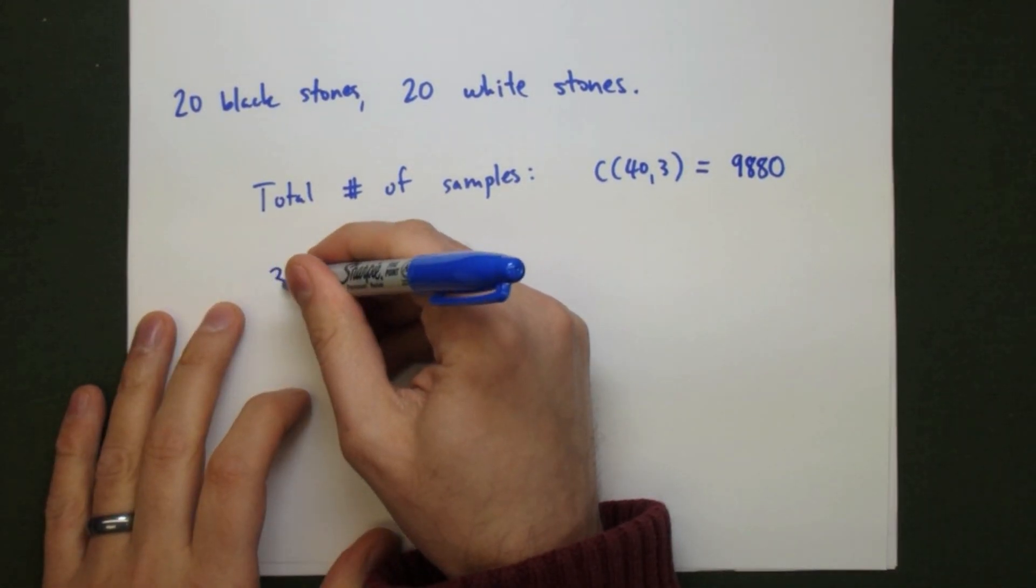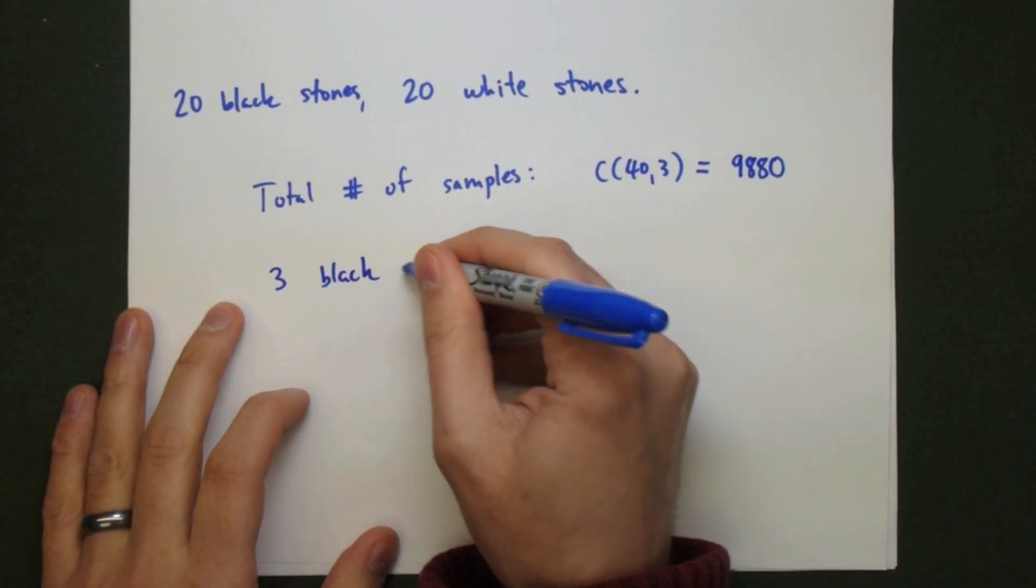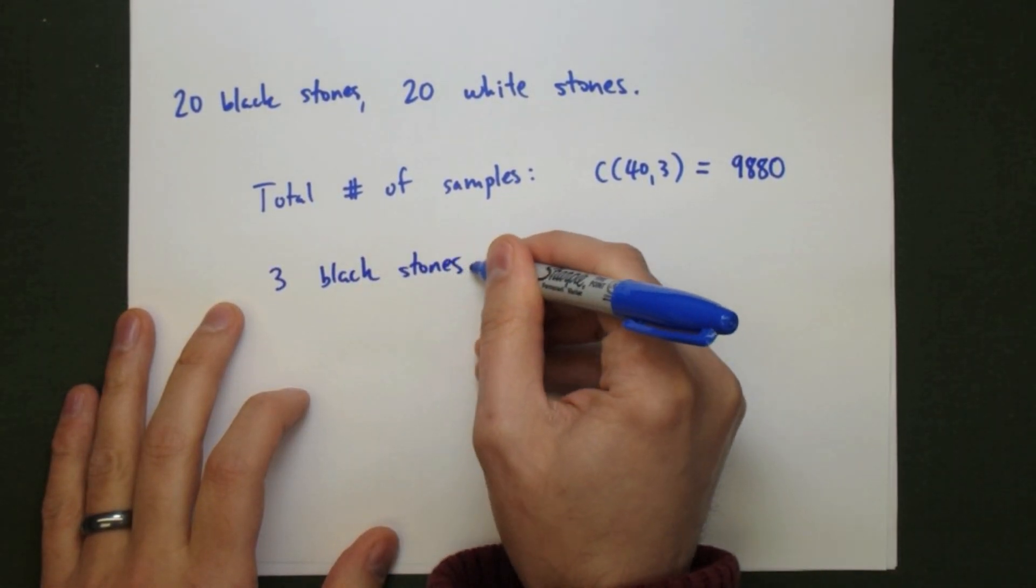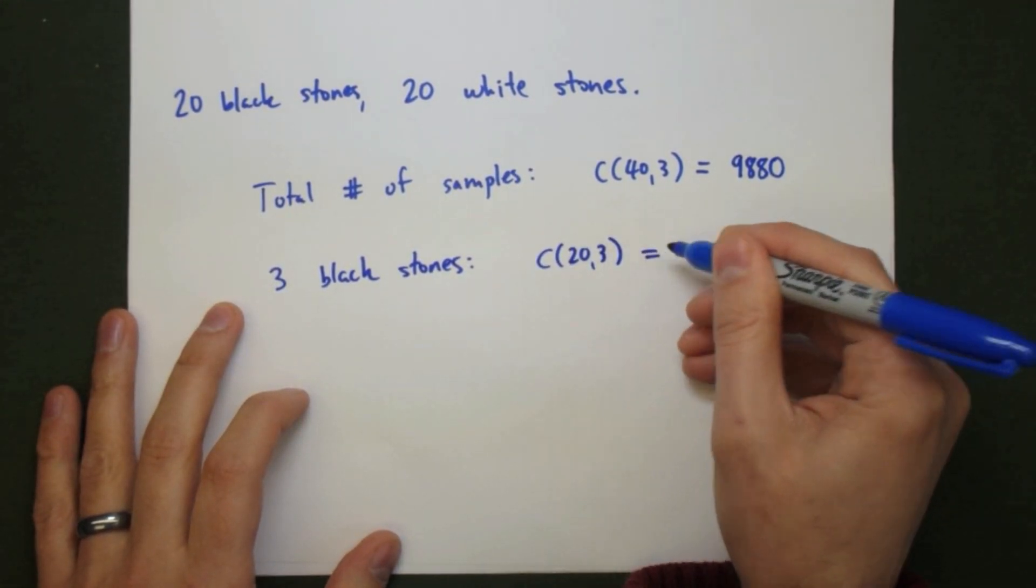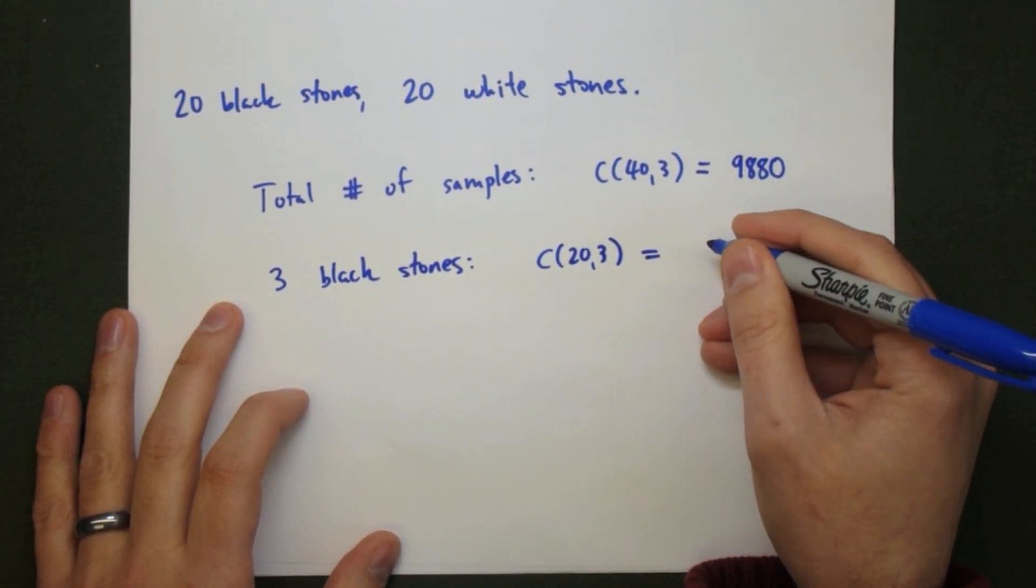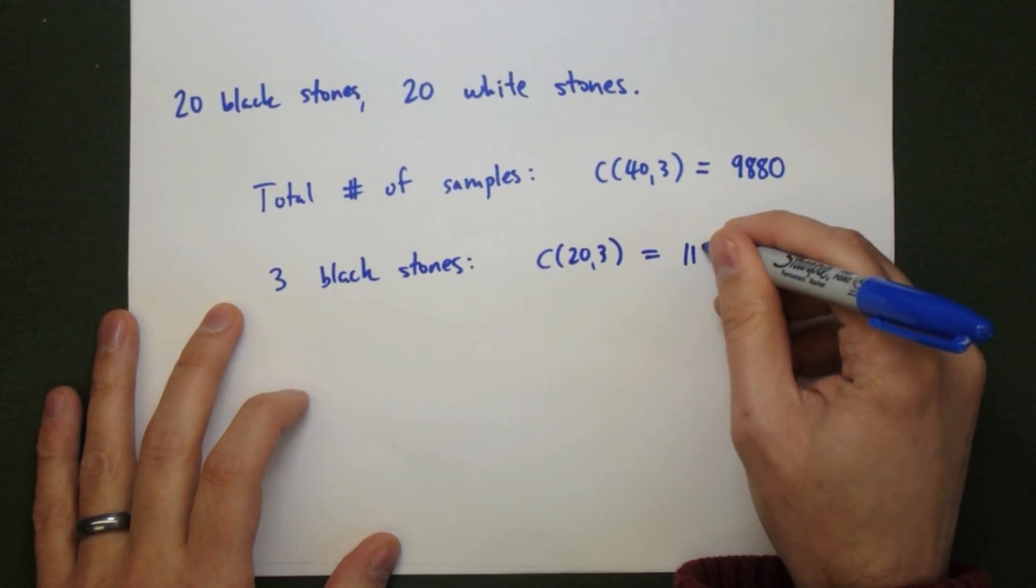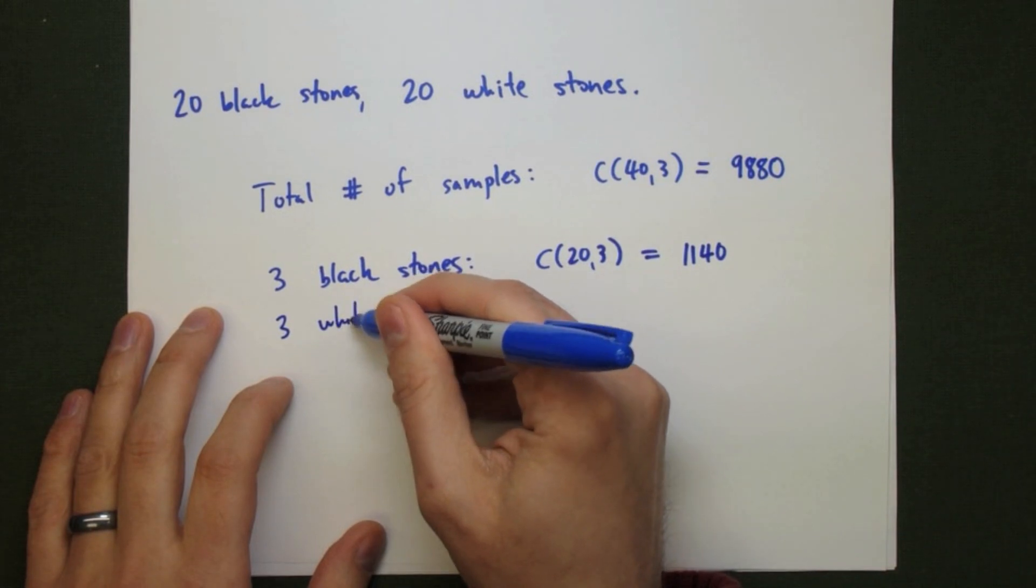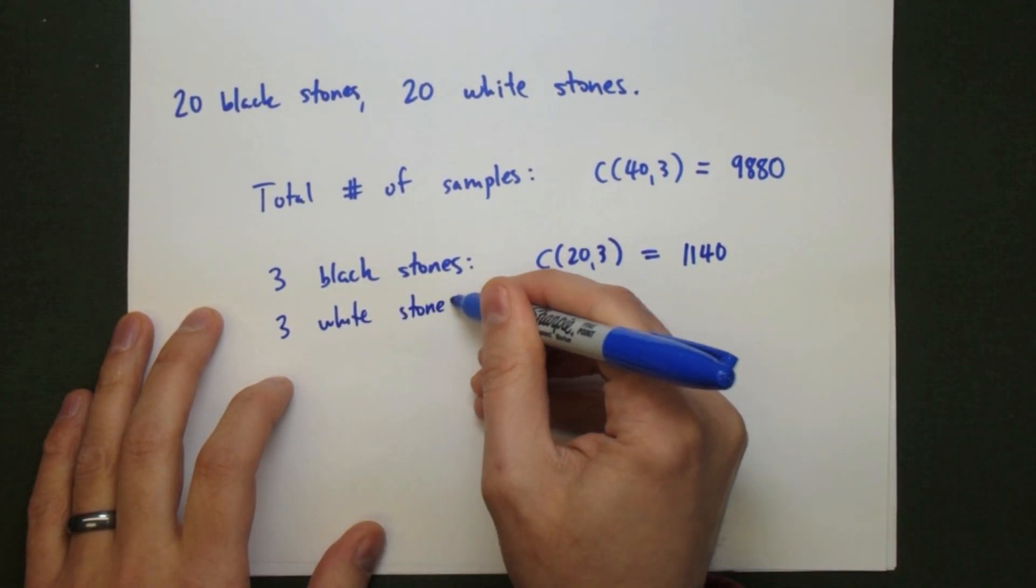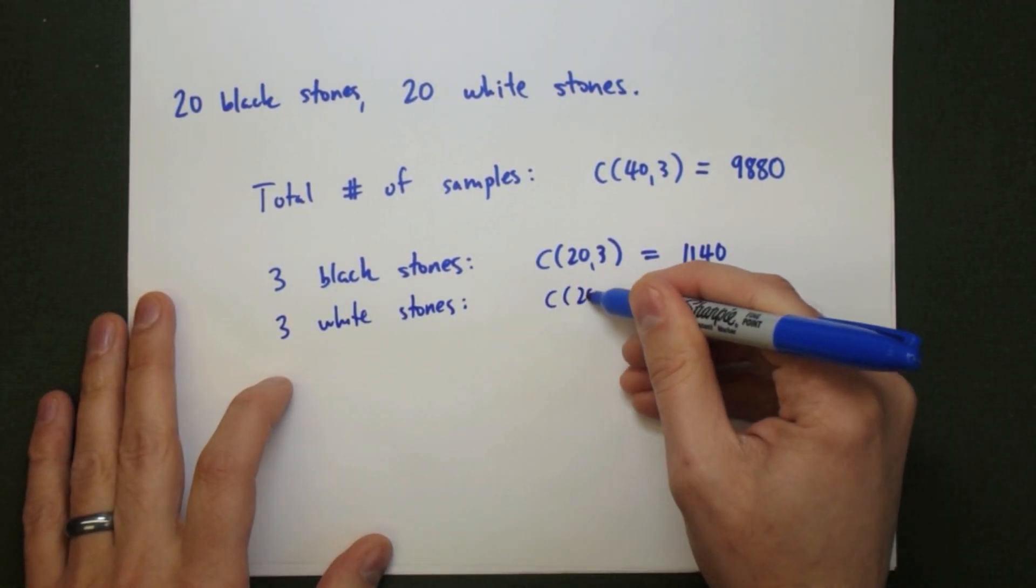To find the numerator we need to find the total number of ways we can get three stones that are the same color. There are two different ways we can do this. We can take three black stones which will be the combination C(20,3). If you calculate this, this is 1,140. We can also have three white stones which again will be C(20,3) or 1,140.